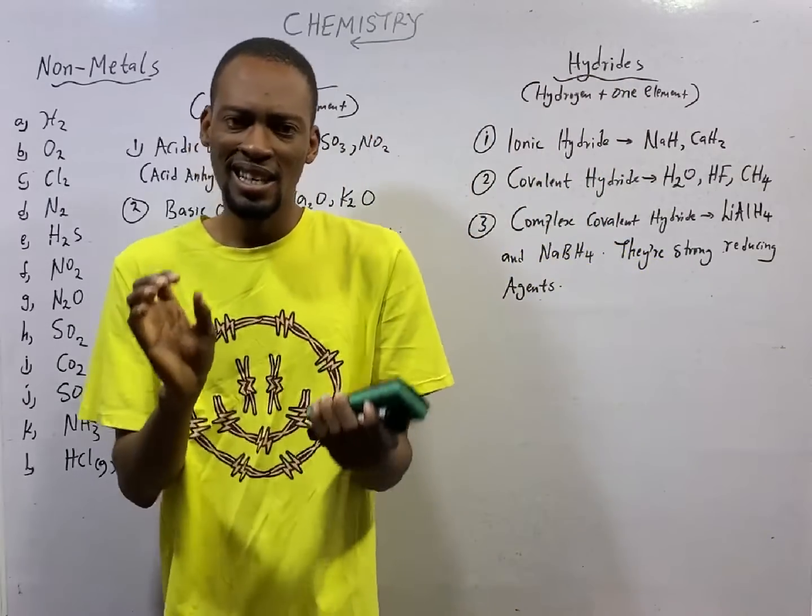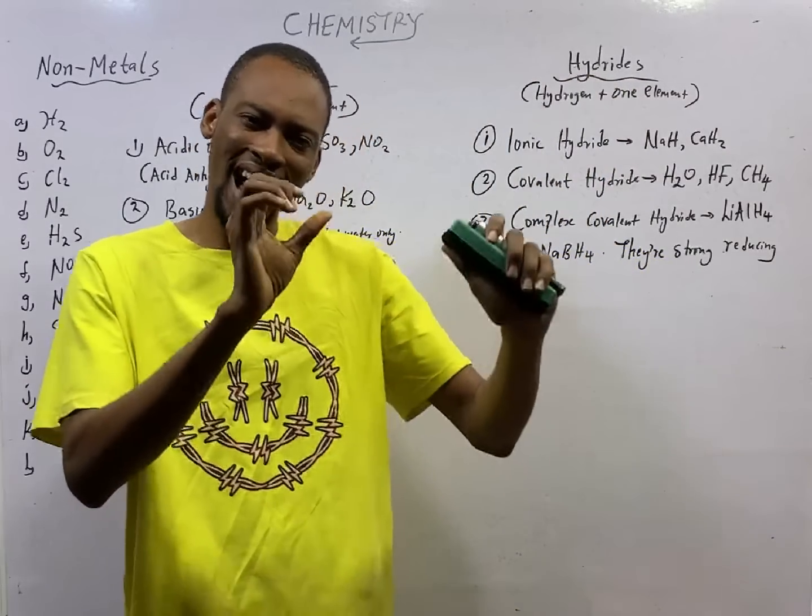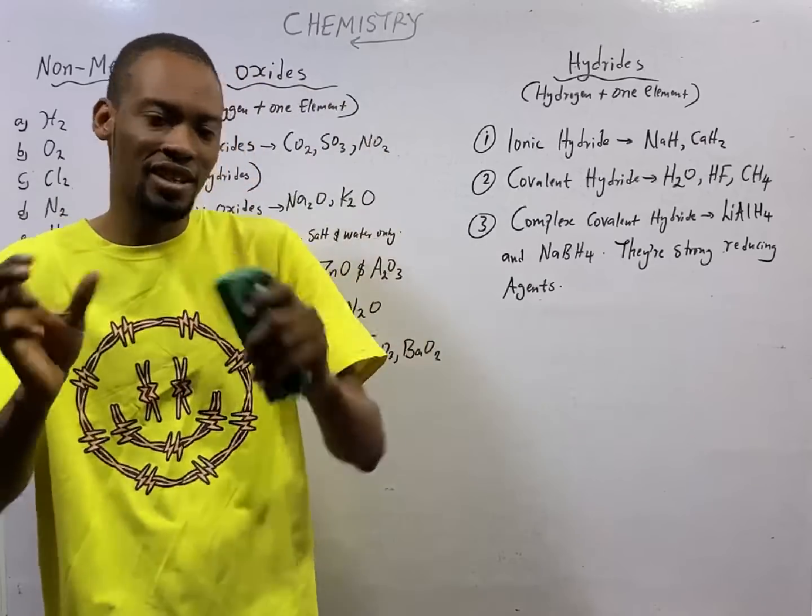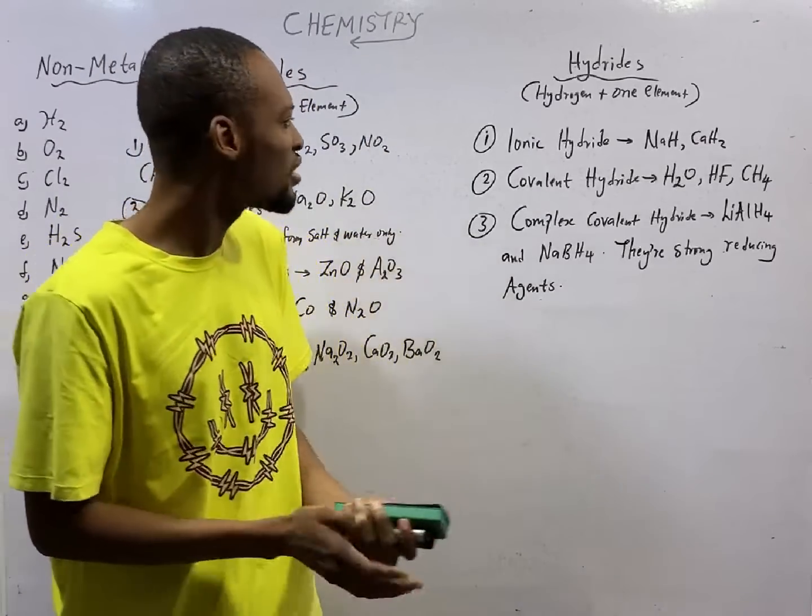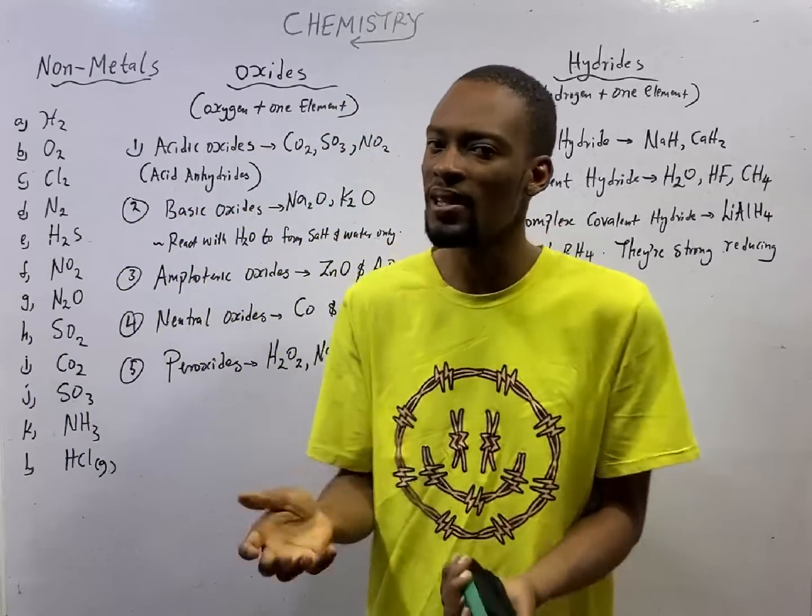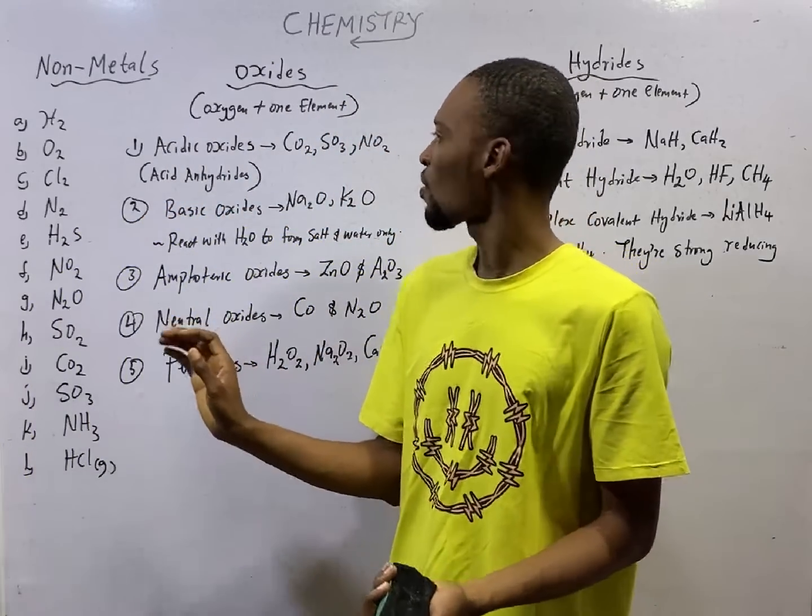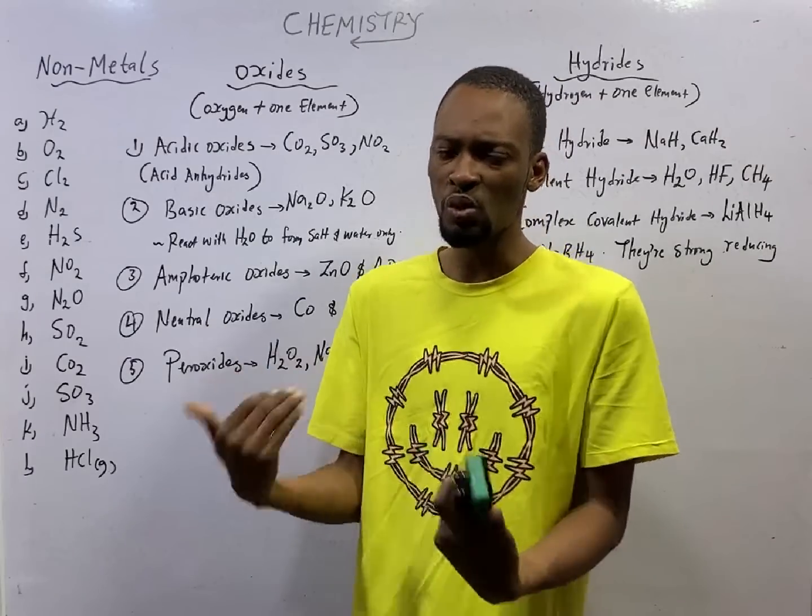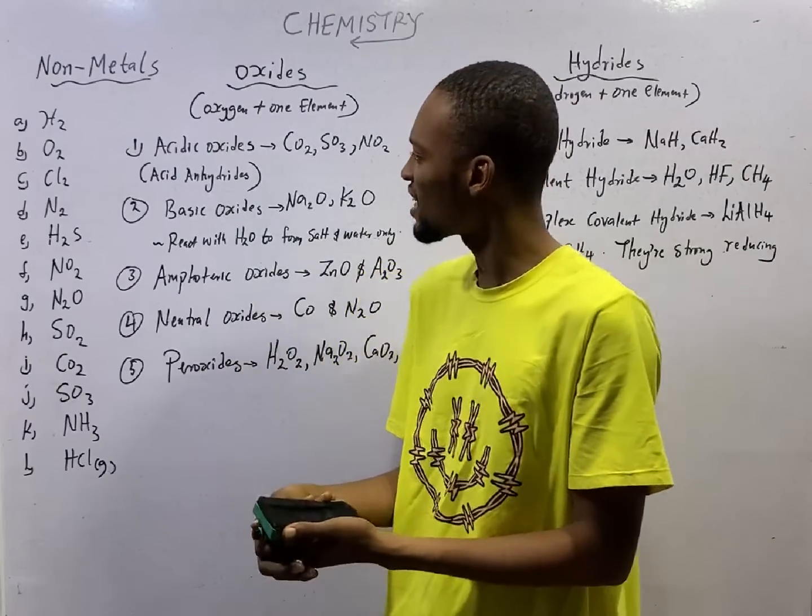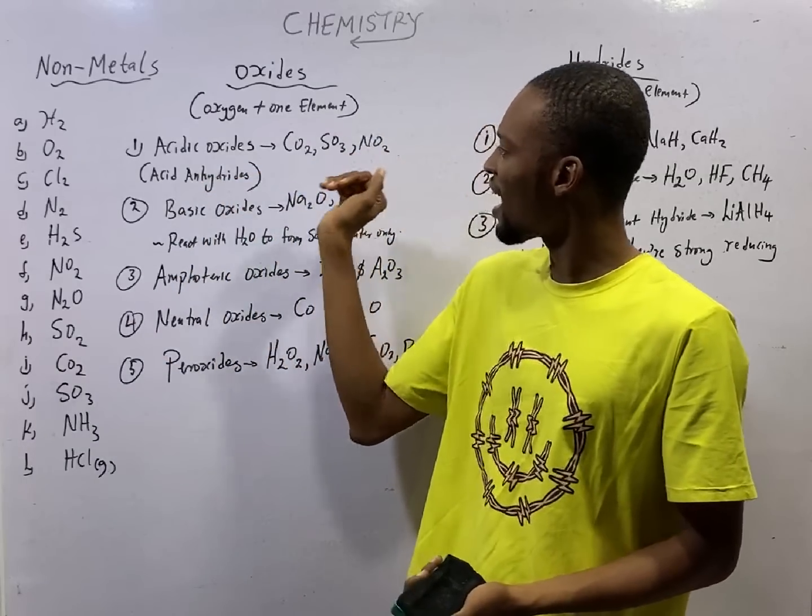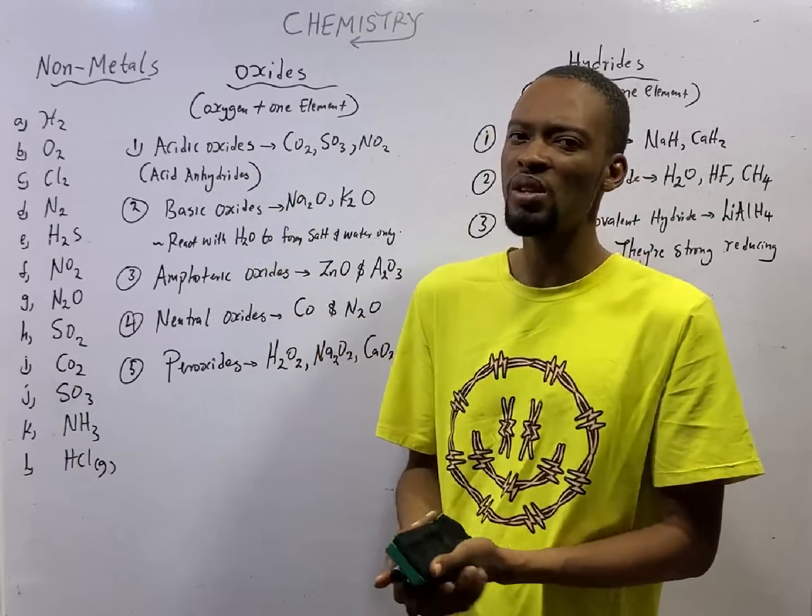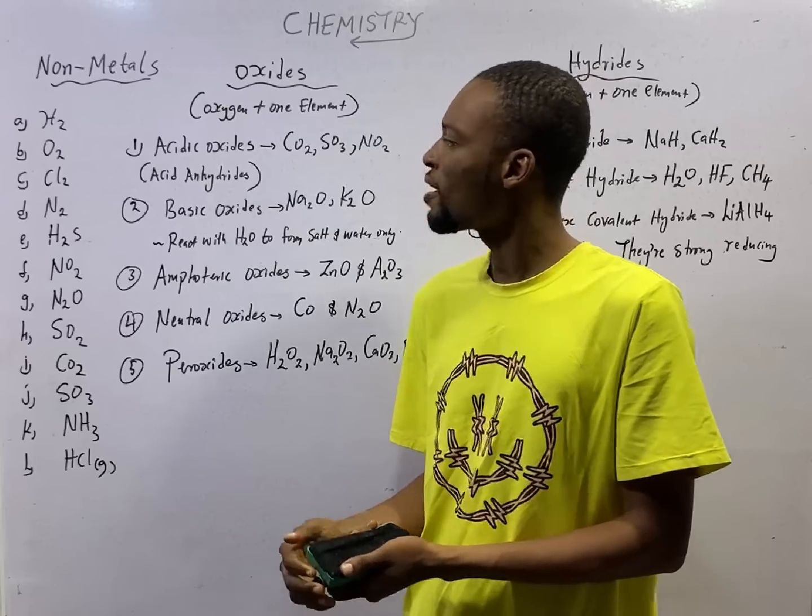Acidic oxides are also referred to as acid anhydrides. What are acid anhydrides? Acid anhydrides are simply oxides that dissolve in water to form acid. Every compound that dissolves in water to form acid is referred to as acid anhydride. So all these acidic oxides are acid anhydrides because they will dissolve in water to form acid.